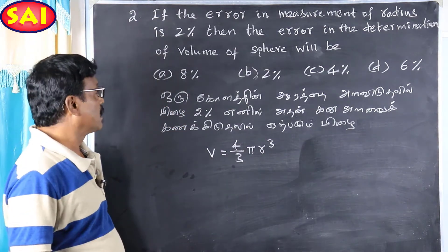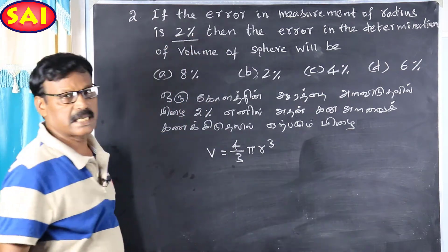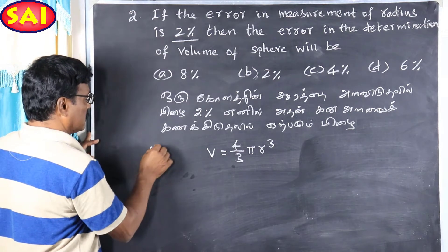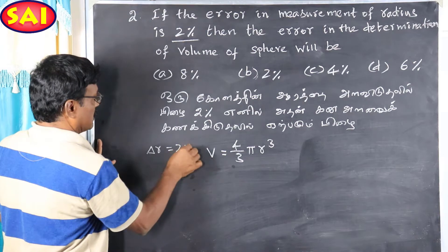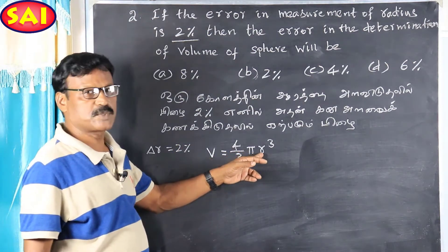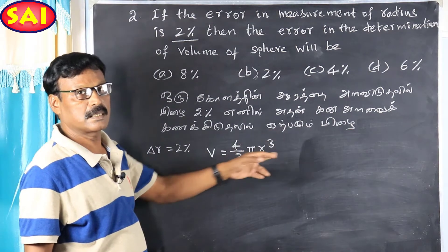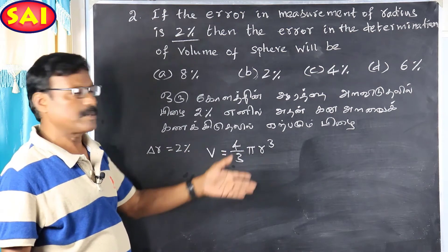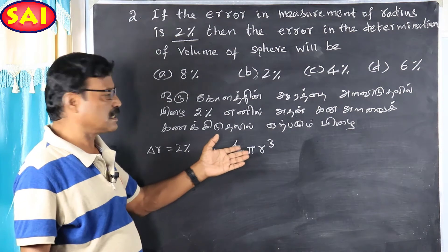I will use a formula. If you measure R, it will be 2% error. That is delta R equal to 2%. How many times does R appear? 3 times — R into R into R. If you measure R, it will be 3 times. Then, the answer is 6%.